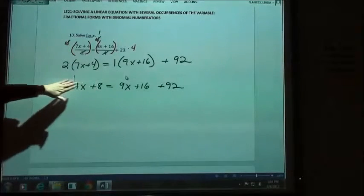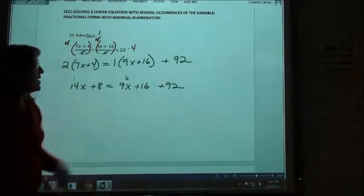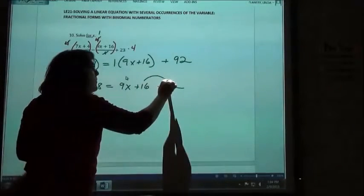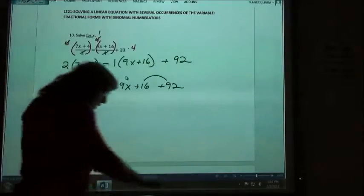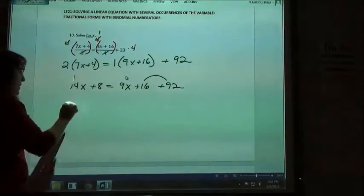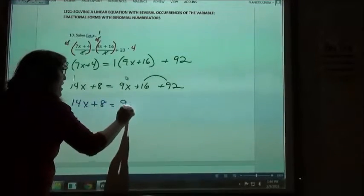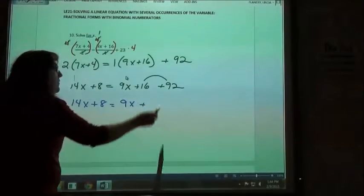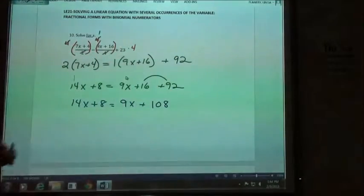The left-hand side only has two terms, we can't combine anything, but the right-hand side has three terms, which tells me I can put some stuff together. I'm going to add my numbers together. I'm not changing any signs because they're not moving to a different side of the equation, I'm just combining them. So 14x plus 8 is going to equal 9x plus, if I add those together, I'm going to get 108, 16 plus 92.